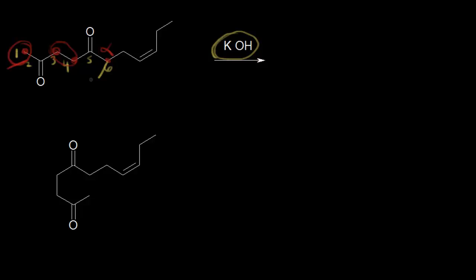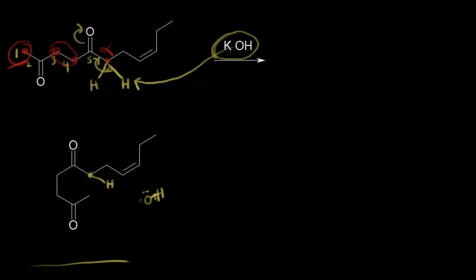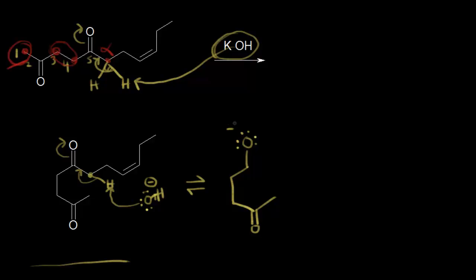If you think about this alpha-carbon, there are two alpha-protons here, and if your base takes one of these alpha-protons, these electrons would move into here, pushing these electrons off onto your oxygen. In a different conformation, one of these acidic protons on our alpha-carbon — hydroxide comes along and functions as a base with a negative one charge — takes this proton, leaving these electrons into here, pushing these electrons off onto the oxygen. Drawing the oxyanion, this is going to be in equilibrium. We form our carbonyl and draw the oxyanion with a negative one formal charge on this oxygen, with a double bond here — this is the thermodynamic enolate.